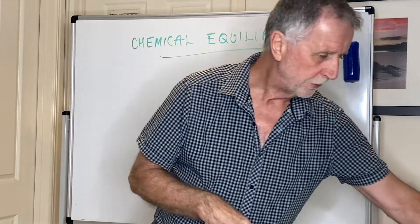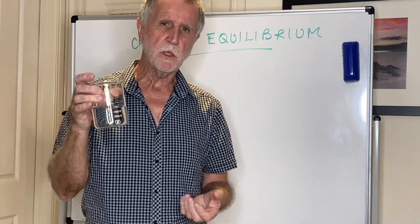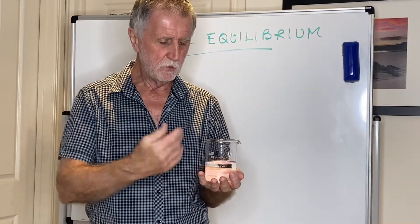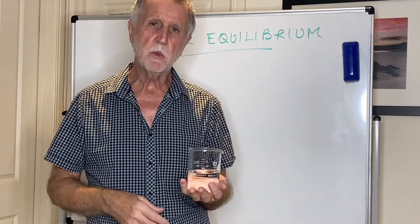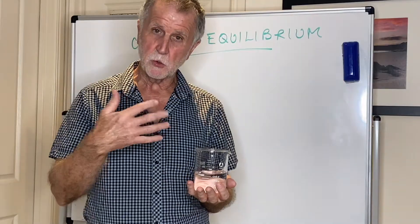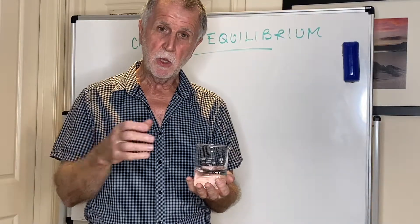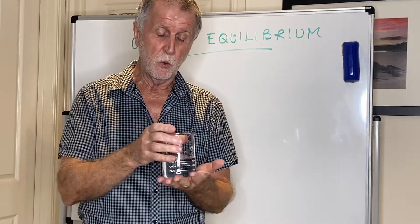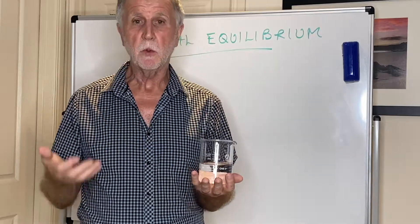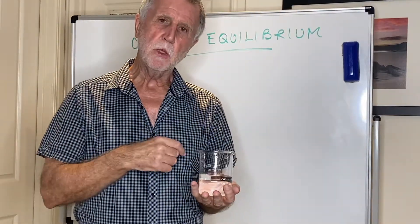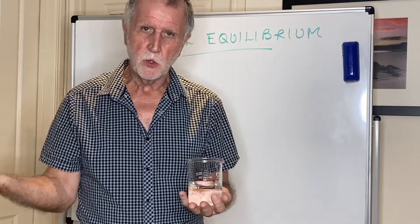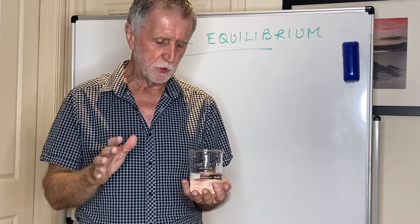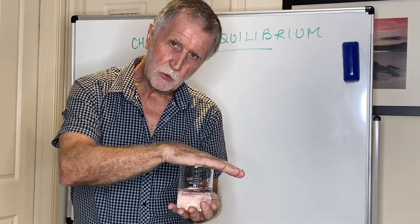The best way of explaining equilibrium: if I have some water in a beaker and I leave it to stand on the bench, what's going to happen? It's going to evaporate, and if I leave it for a few days or maybe a bit longer, all of that water will evaporate from the beaker. That's something we know — that's a very simple process.